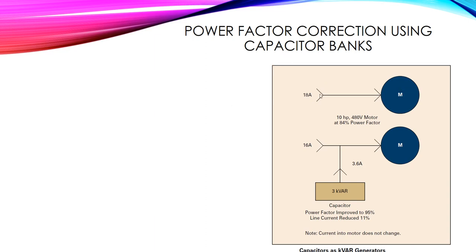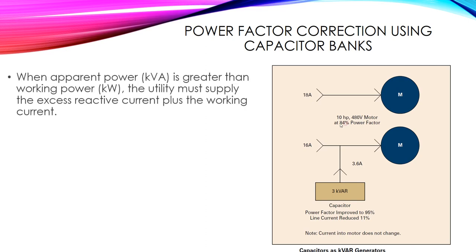Here is a simple example — we have a motor absorbing apparent power from the grid. The motor has values of 10 horsepower, 480 volts, and a power factor of 84 percent, absorbing 18 amperes from the grid. In order to reduce the current absorbed from the grid, we use a capacitor bank. In this example we added a 3 kilovar capacitor, which supplies a current of 3.6 amperes, reducing the grid current from 18 to 16 amperes.